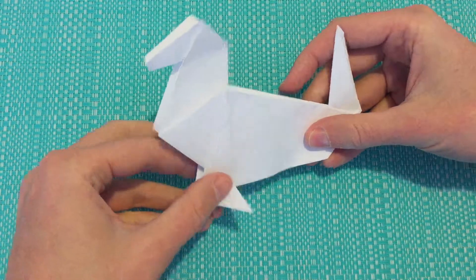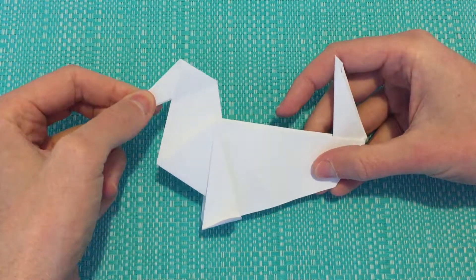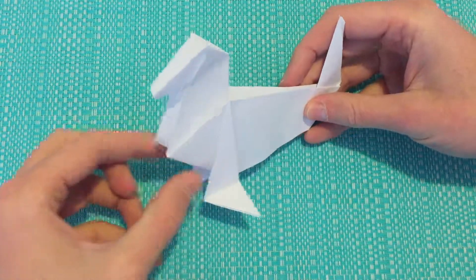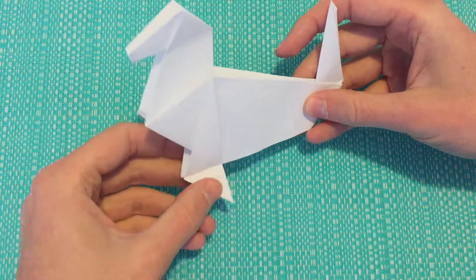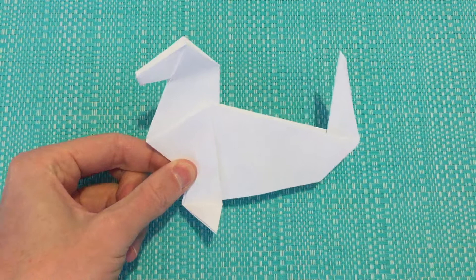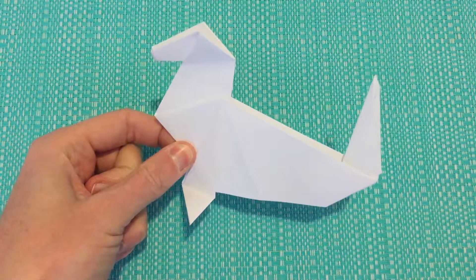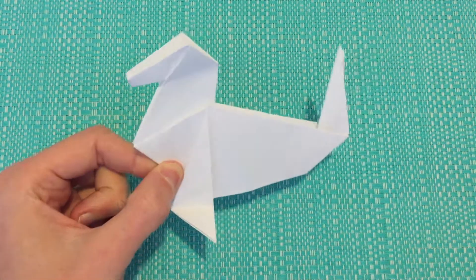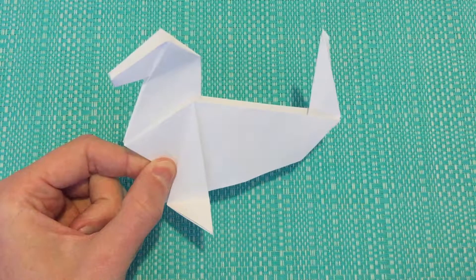So then remaining step, draw a little face on, any other decorations. Pull these flippers down, and then you have an origami seal. If you enjoyed the video, have a look at our other origami videos. Hit the like button, subscribe to our channel, and hope that you enjoy.